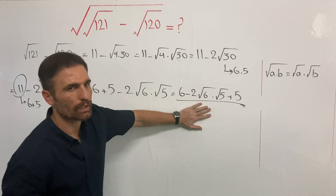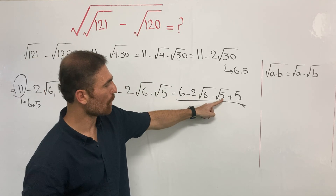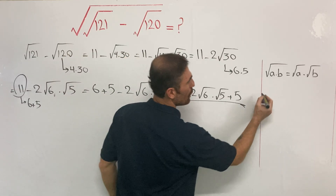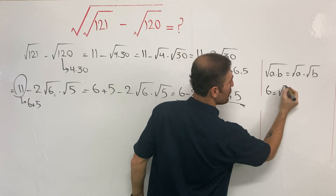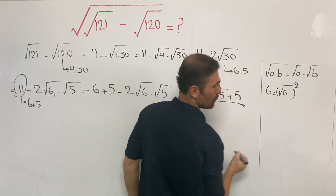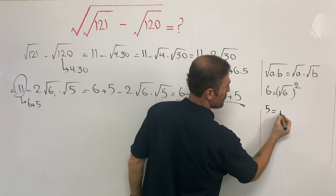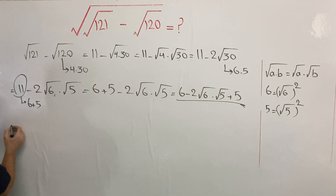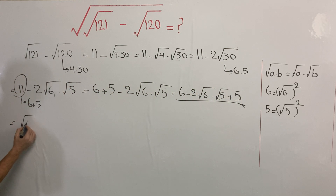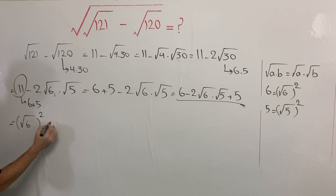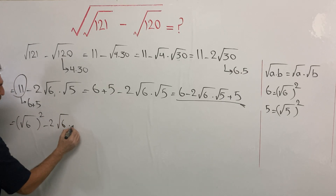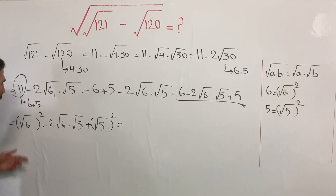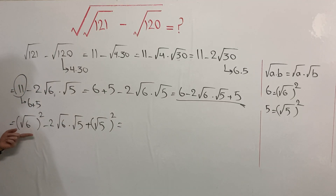Now can you tell me what we have here? Second root of 6, second root of 6, second root of 5 — we need to be tricky. I'm going to write 6 as second root of 6 to the power of 2, and 5 as second root of 5 to the power of 2. So it is going to be: second root of 6 to the power of 2, minus 2 times second root of 6 times second root of 5, plus second root of 5 to the power of 2.